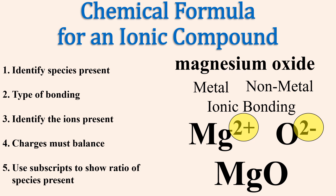There is no need to include subscripts of 1 in the chemical formula. The chemical formula of magnesium oxide is MgO.